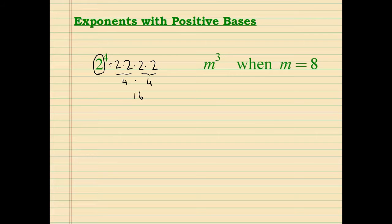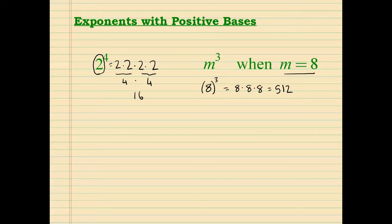The next one is a little different: m to the 3rd power, but we have a hint that m equals 8. So we substitute — instead of m, put 8, to the 3rd power. That equals 8 times 8 times 8, which is equal to 512.